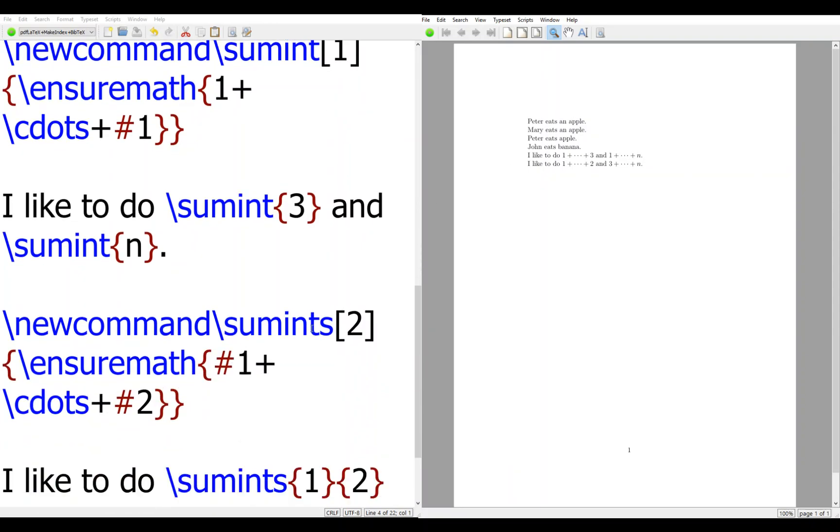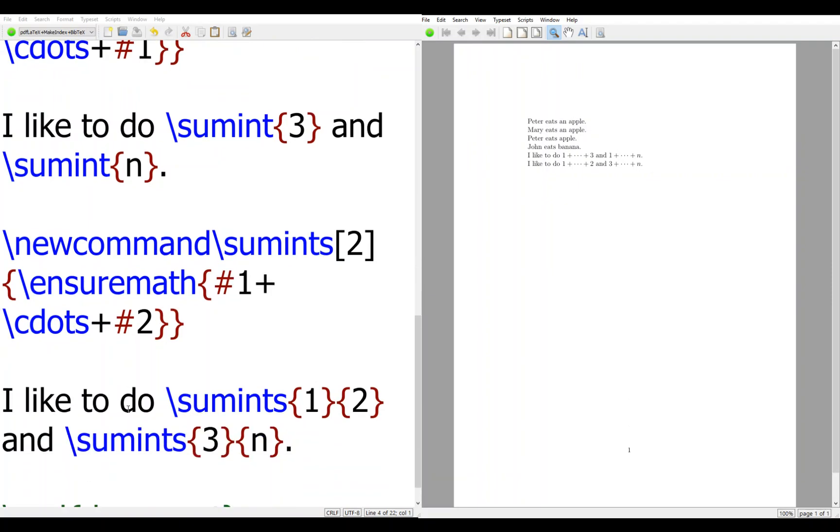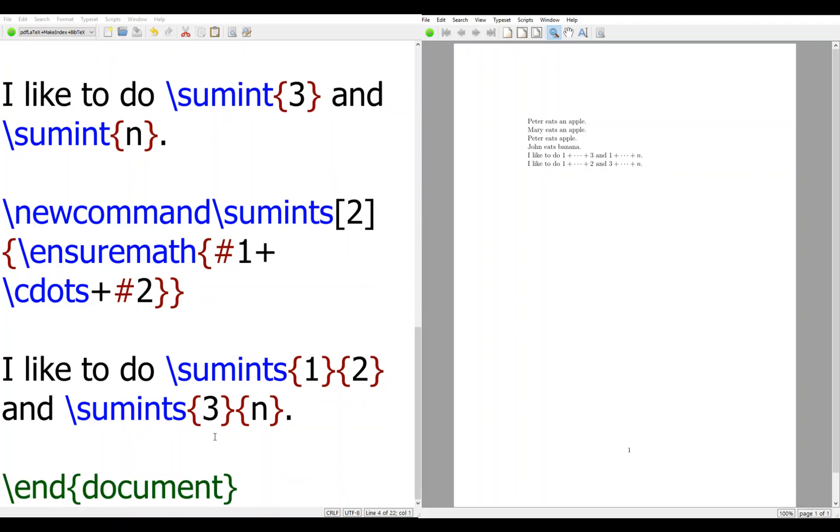And \sumints takes two inputs: first input up to second input. So sum from 1 to 2, and sum from 3 to n.